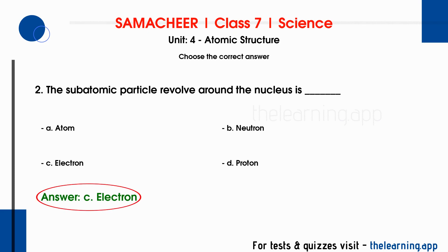The atom has subatomic particles: proton, neutron, and electron. Protons and neutrons are in the center of the nucleus. Electrons revolve around the nucleus in orbit. So, the subatomic particle that revolves around the nucleus is electron.